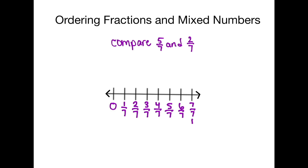In this video, we're going to order fractions and mixed numbers on number lines. Ordering fractions on a number line is similar to ordering whole numbers and integers on a number line. Remember that fractions represent part of a whole. To order fractions on a number line, it helps to have a common denominator. Let's first look at an example using fractions with like denominators. This problem says to compare and order 5/7ths and 2/7ths. Our common denominator is 7, and each section on the number line represents 1/7th. We can clearly see that 2/7ths is to the left, meaning it's less. So 2/7ths is less than 5/7ths.